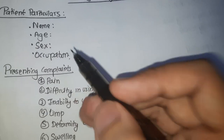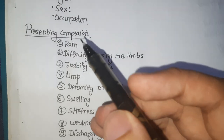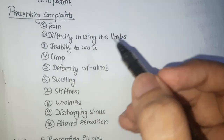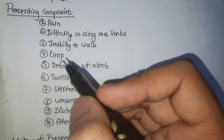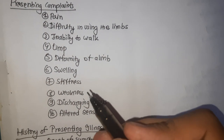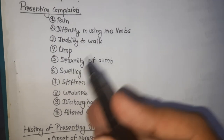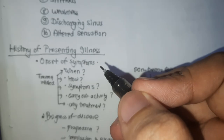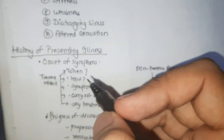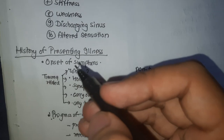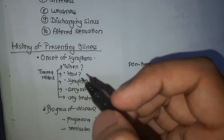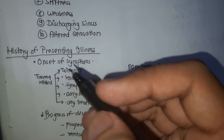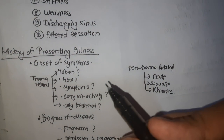Now talking about presenting complaints — we have various presenting complaints like pain, difficulty in using the limbs, inability to walk, limp, deformity of limb, swelling, stiffness, weakness, discharging sinus, and altered sensation. In the history of presenting illness, one must give the patient time to settle down and all presenting complaints should be elaborated in detail.